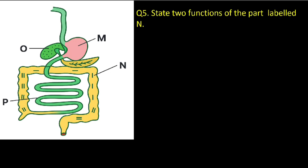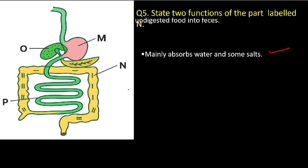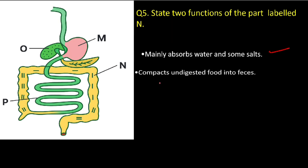State two functions of the part labeled N — the large intestine. First, it mainly absorbs water and some salts, as most of the water is absorbed in the large intestine. Second, it compacts undigested food into feces to be excreted from the body.